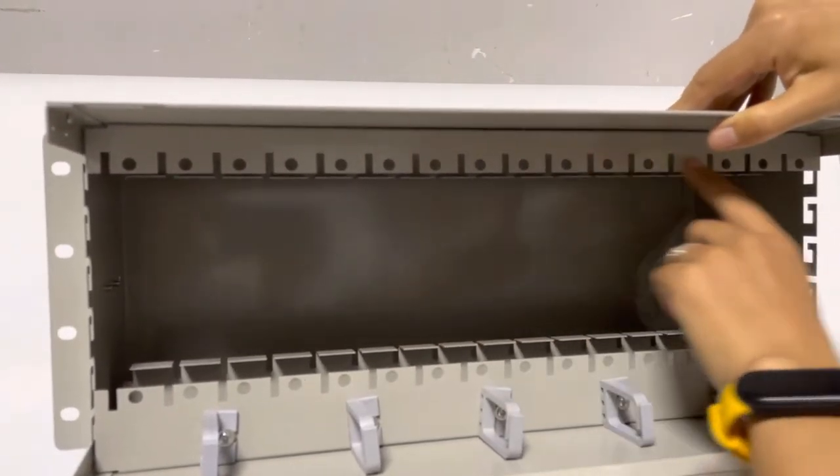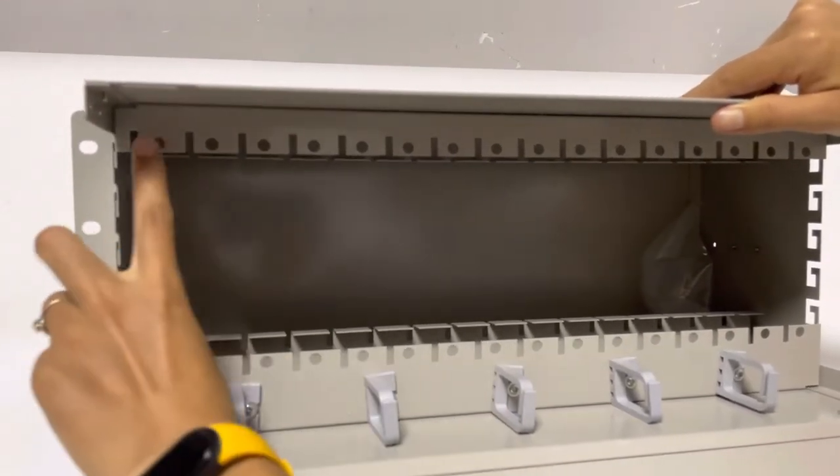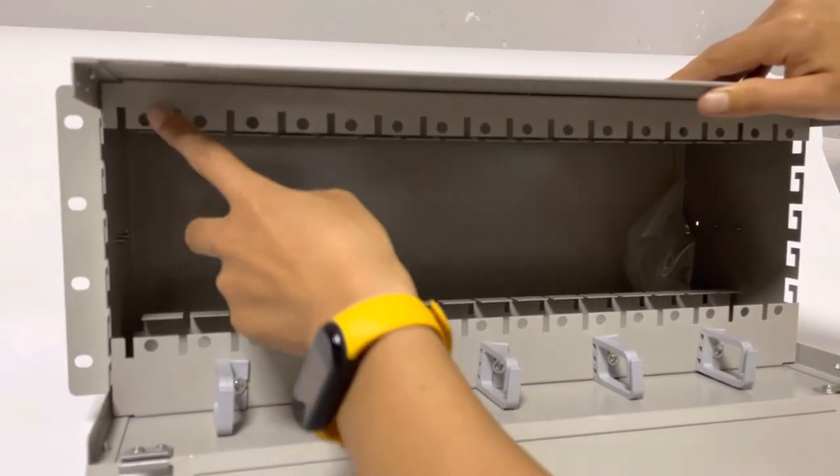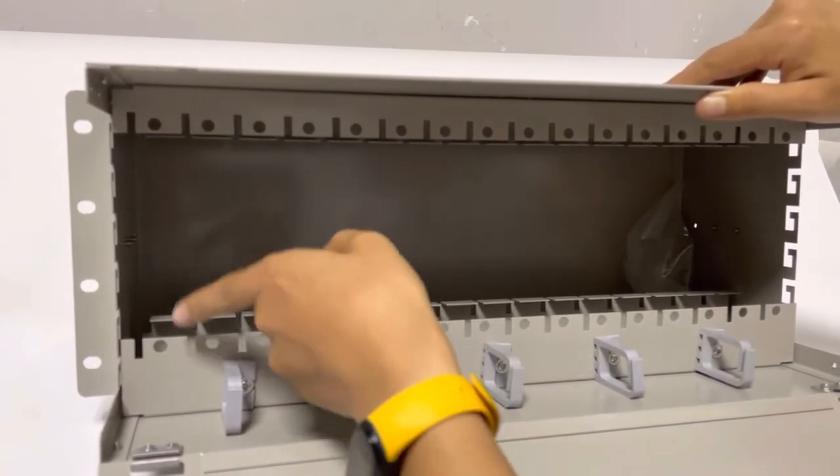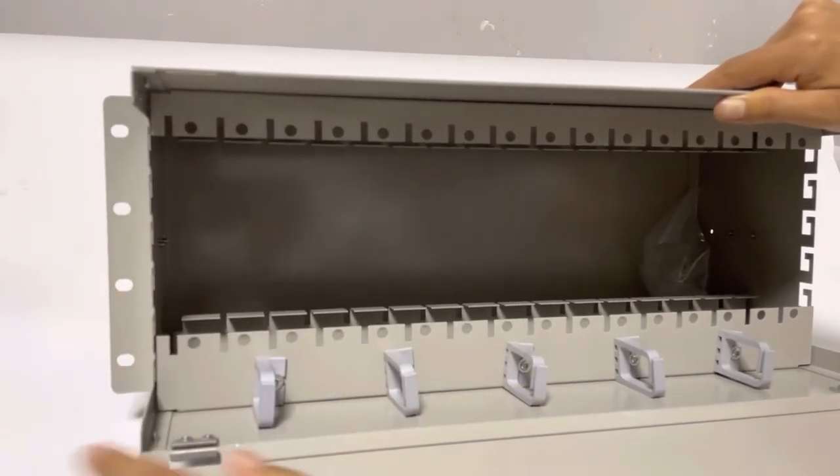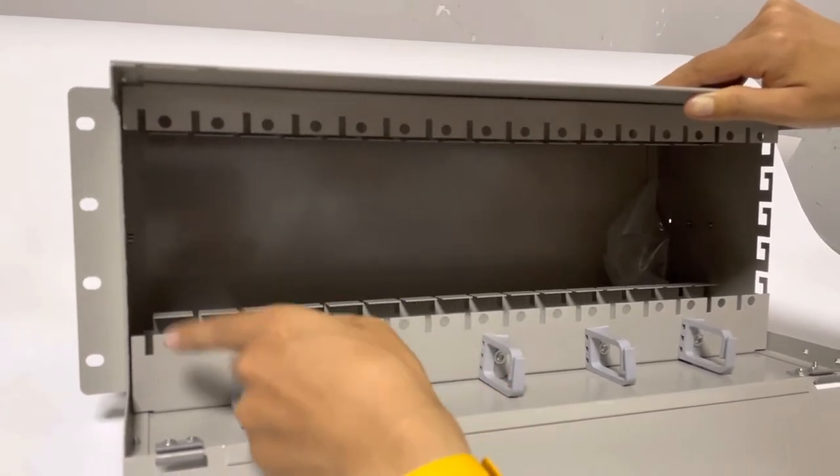Nine, ten - total 16 cassette ports here. It can fit one cassette PLC module or cassette CWDM. It's very variable for your option. Only if your cassette can fit this size, it can be mounted in the rack.